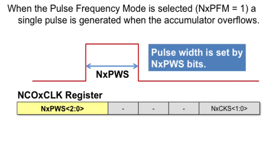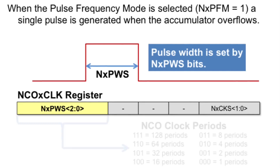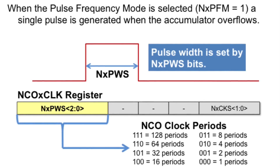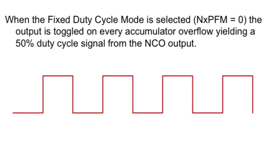The width of the pulse is based on a number of clock pulses from the clock source selected as the input to the NCO module. The width of the pulse is set by the NCO output pulse width select bits, or the PWS bits in the NCO clock register. The pulse width has eight options to choose from, set to a defined number of input clock pulses. When the fixed duty cycle mode is selected — the N-PFM bit equals 0 — the output is toggled on every accumulator overflow, yielding a 50% duty cycle from the NCO output.